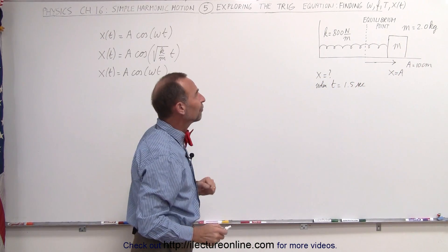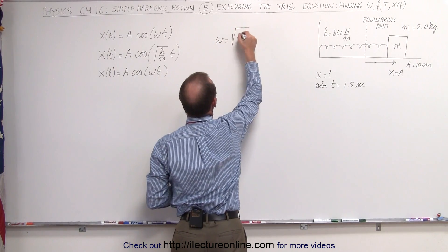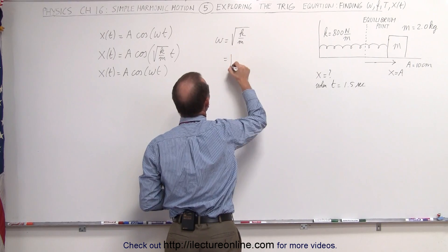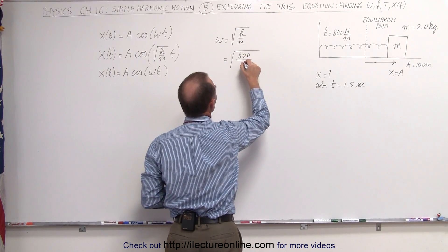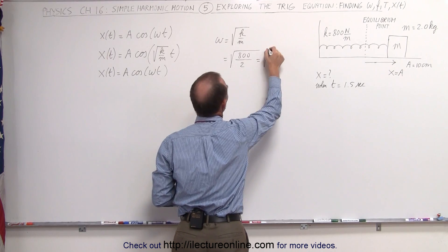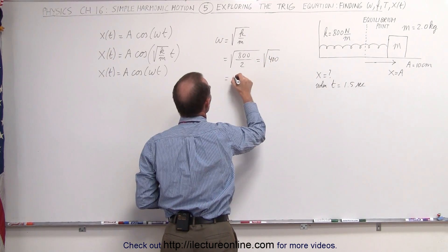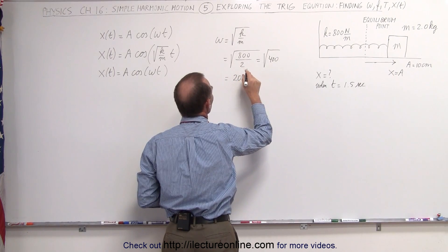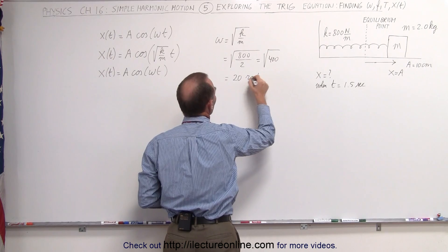Let's find omega first. Omega is defined as the square root of k divided by m. In this case k equals 800 newtons per meter, the mass equals 2, so that's the square root of 400, and the square root of 400 equals 20. That becomes 20 radians per second.